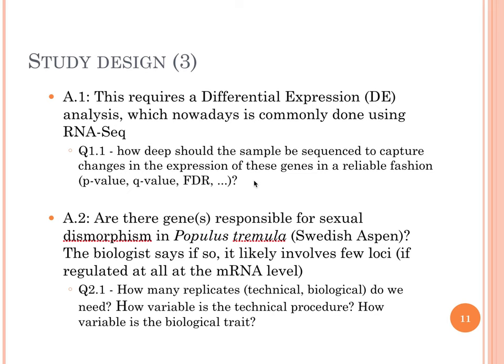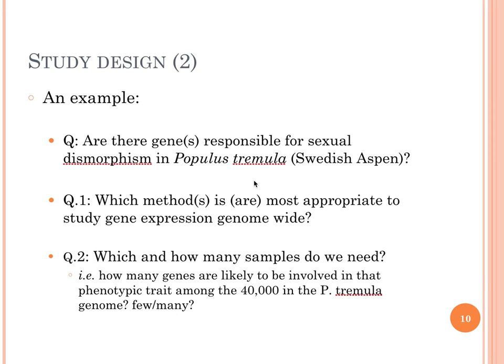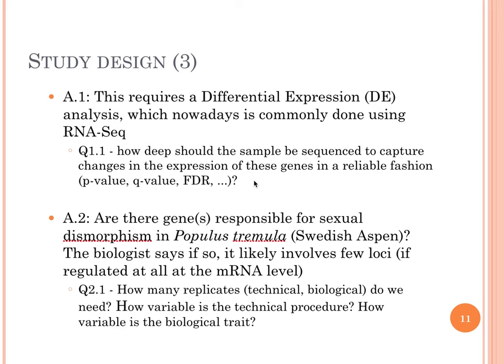But now, talking about question number 2 — which and how many samples do we need? — an answer depends on deciding how many genes are responsible for sexual dimorphism in Aspen. Are there a lot, or are there few? Well, talking to the biologist, we know that it likely involves few loci, if that process is regulated at all at the messenger RNA level. So we know that we have few genes that might be significantly differentially expressed between the two conditions.